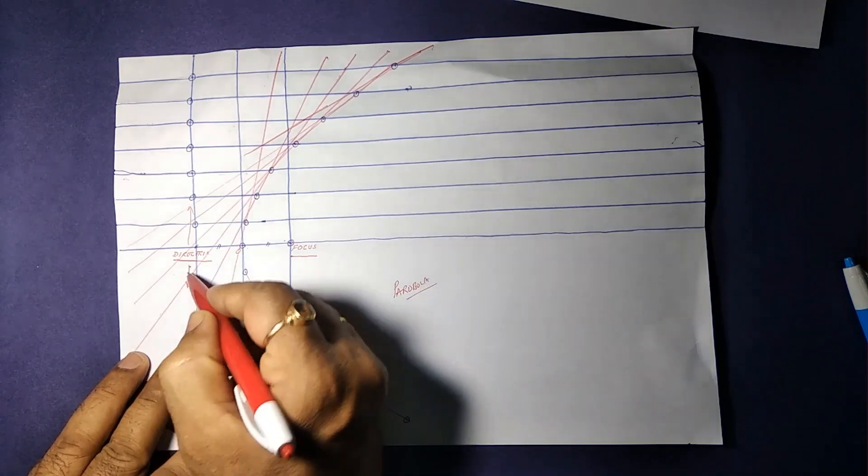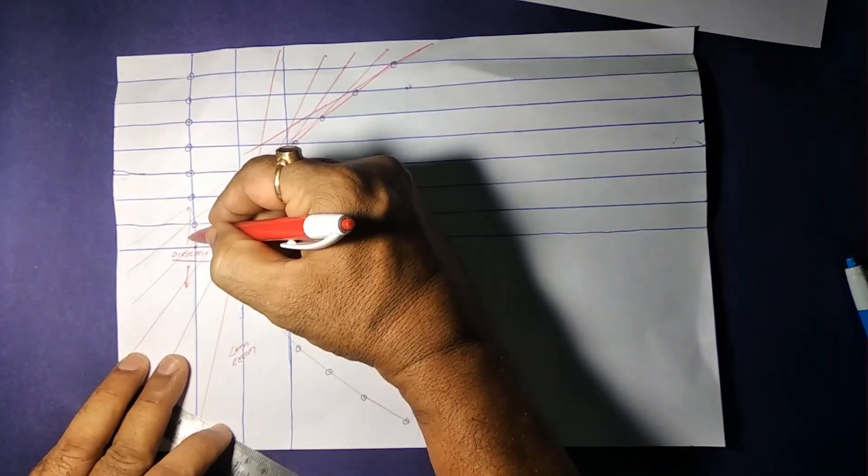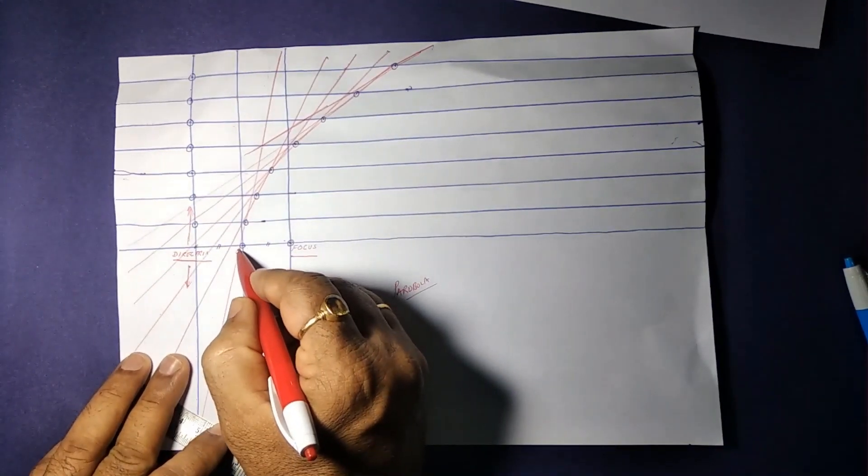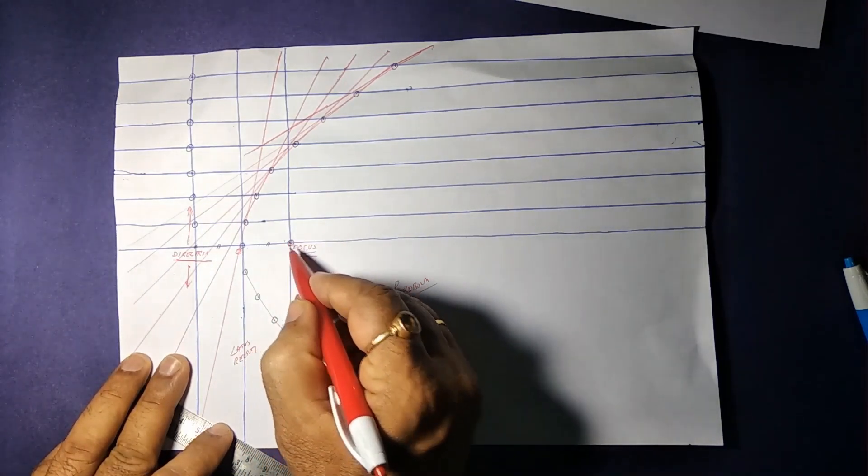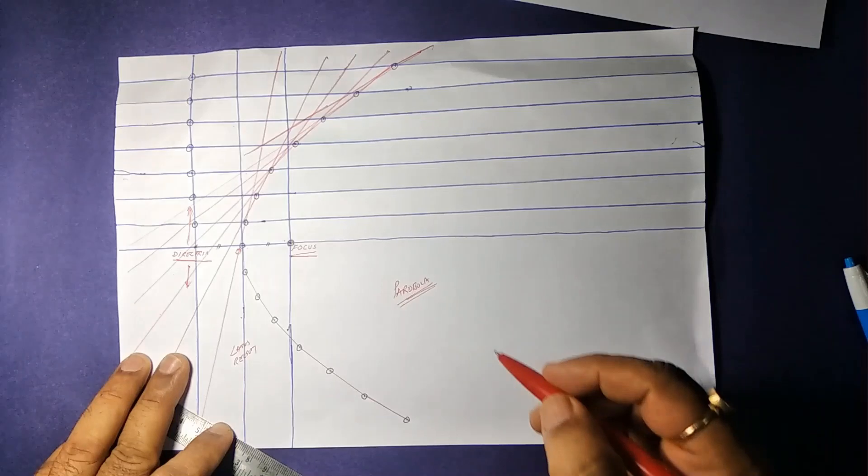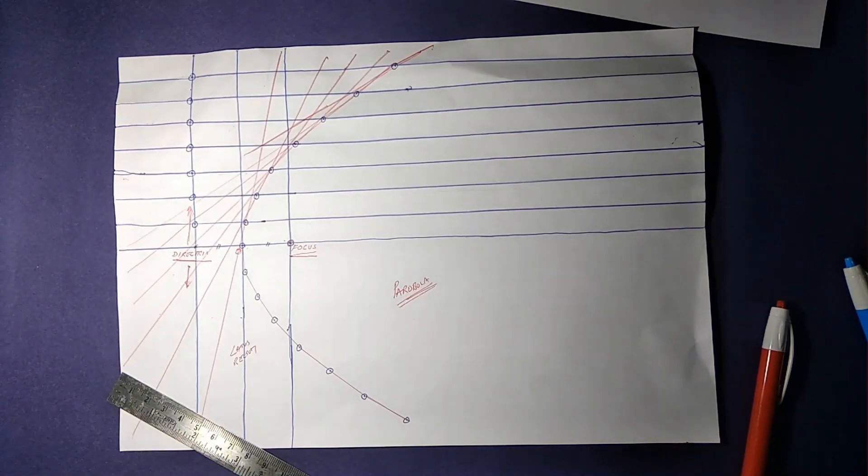This is the directrix vertical line on which we marked all the points. And this is the focus. And this parabola. Happy folding viewers!